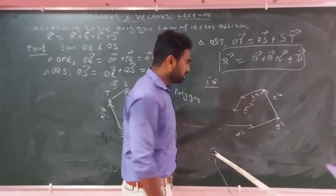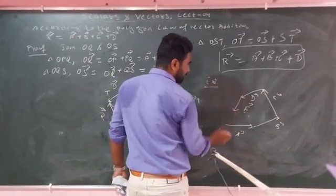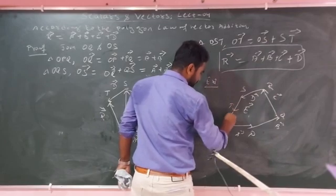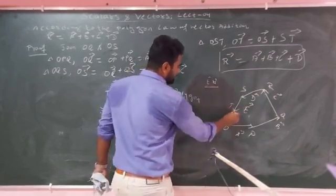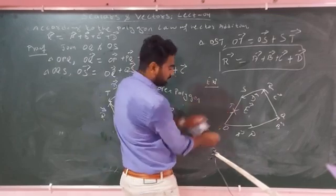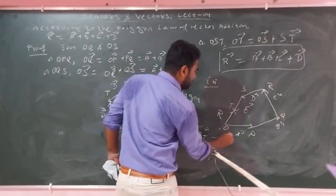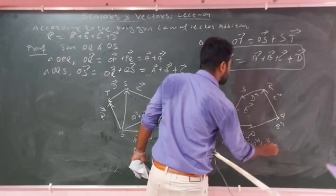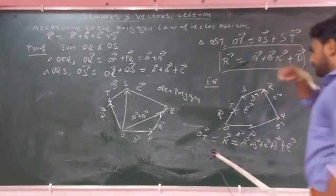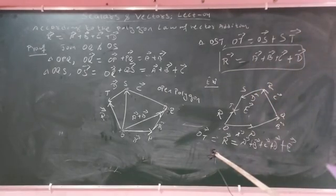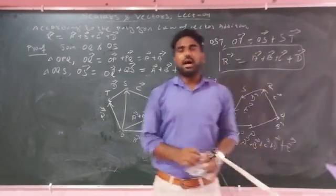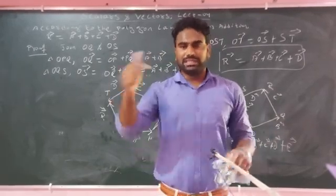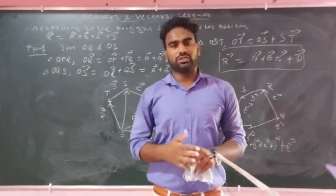The resultant is: A vectors plus B vectors plus C vectors plus D vectors — this is the Polygon Law of Vector Addition. In the next class, lecture number five, we will discuss dot product and cross product. The description link will have lecture one, lecture two, and lecture three. Thank you.